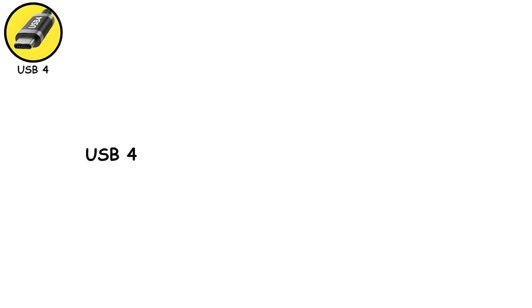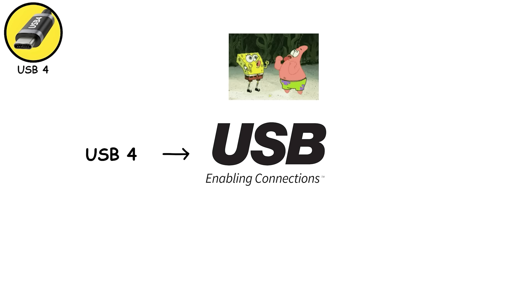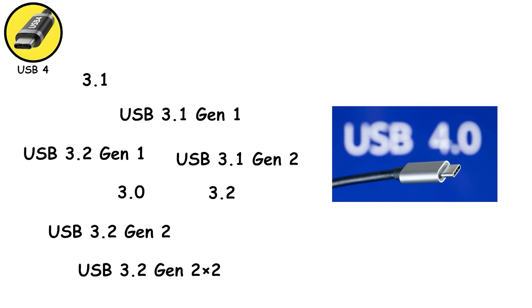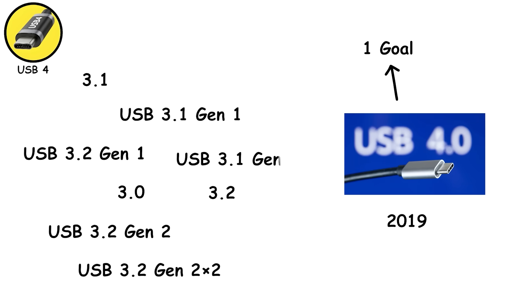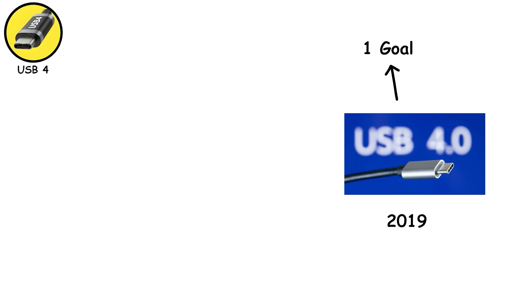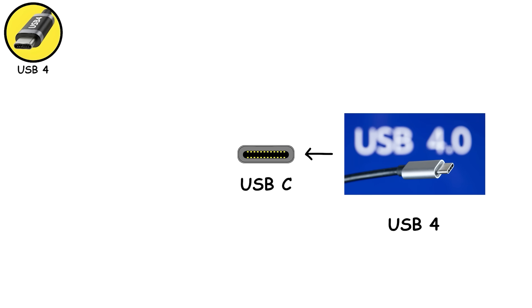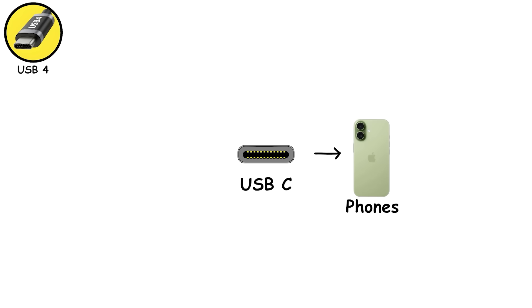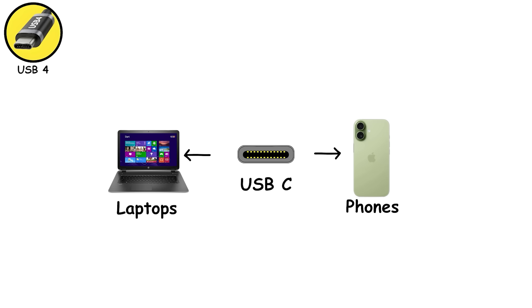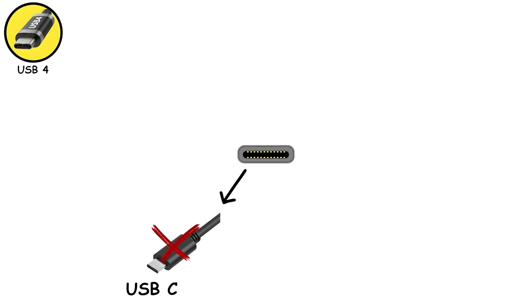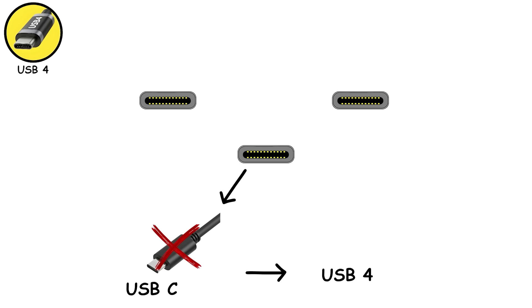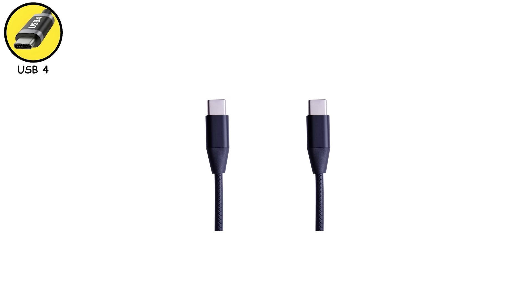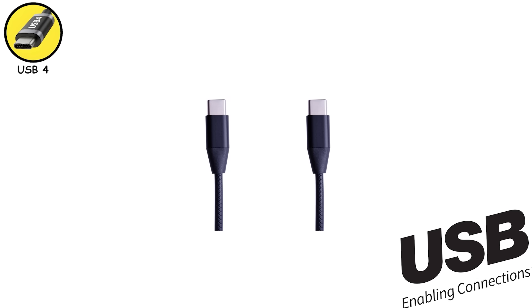USB 4 is where USB finally stopped messing around and decided to grow up. After years of confusing names and too many Gen labels, USB 4 arrived in 2019 with one goal: clean up the chaos. First, USB 4 is USB-C only — no more Type-A, no more bulky Type-B shapes, just the modern reversible connector everyone already uses. But here's the catch: not every USB-C port is USB 4. Some ports look identical but only support USB 2.0 — visually identical ports with 200x different speeds. Always check for USB 4 branding or specifications before assuming you've got the fastest port.